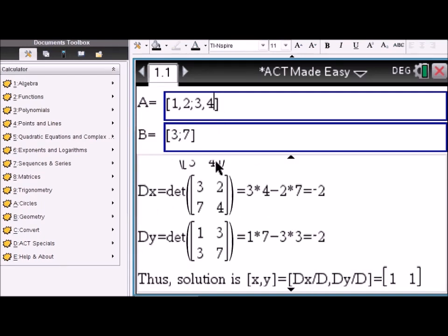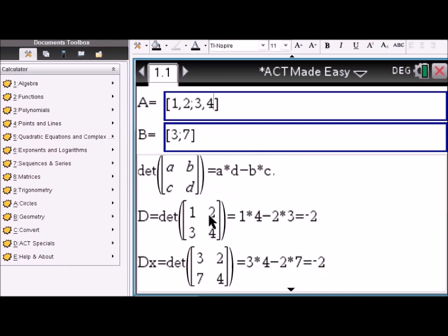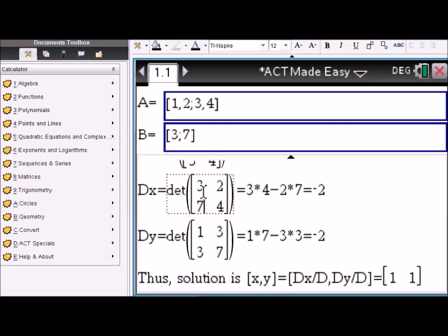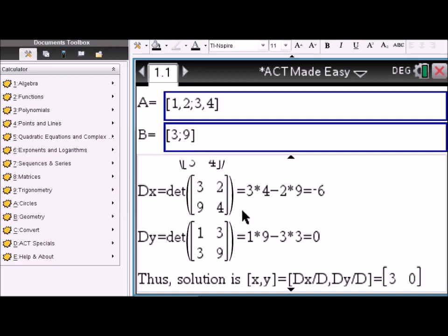1, 2, let's scroll up. 1, 2 in the first row, 3, 4 in the second row, and the right side 3, 7. We're going to find the determinant of the matrix, which is negative 2, and the other two determinants. Those determinants are used then to figure out the solution x, y. Again, if you change any answer, you immediately change the solution.